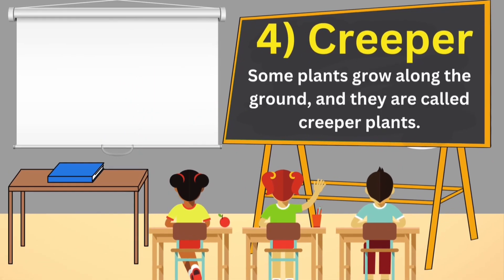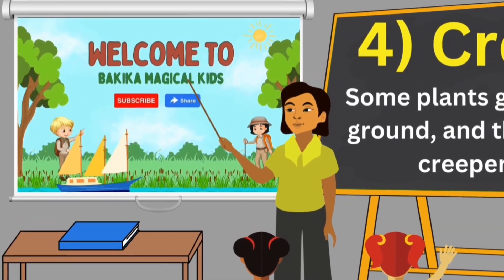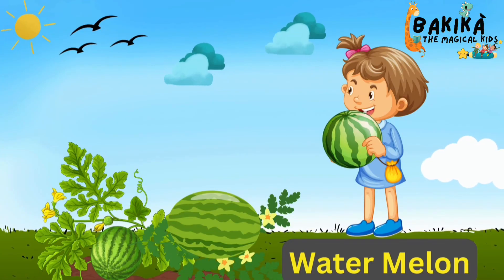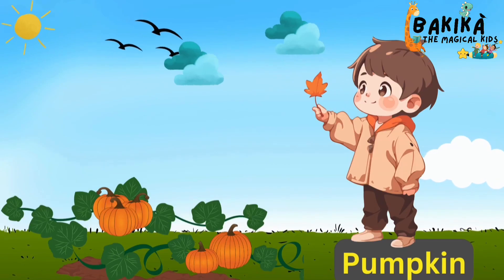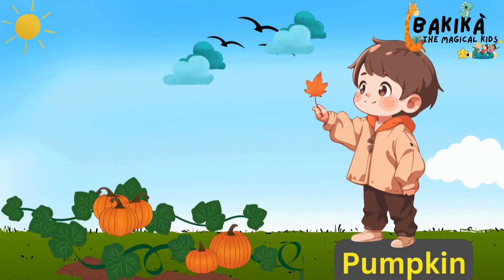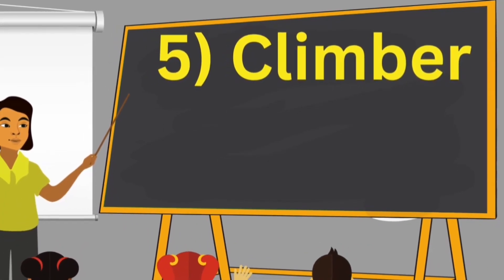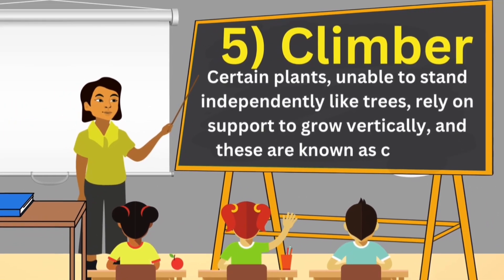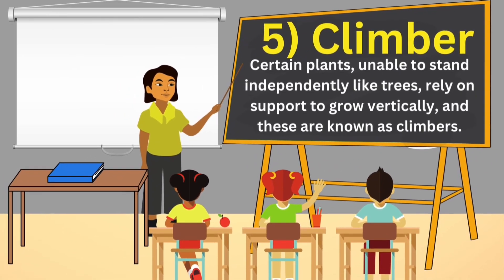Examples of creeper plants include the watermelon plant and the pumpkin plant. Certain plants are unable to stand independently like trees and rely on support to grow vertically — these are known as climbers.